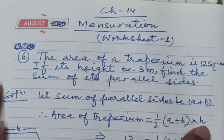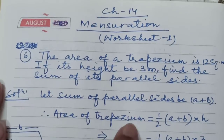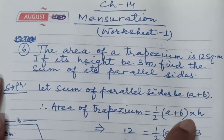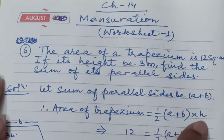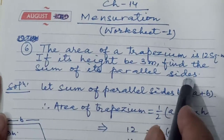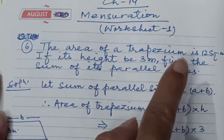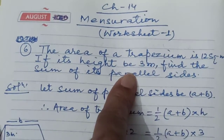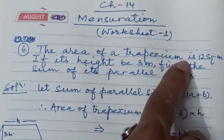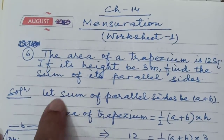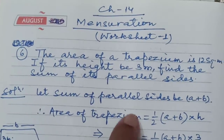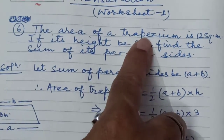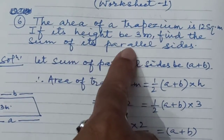So I repeat again: the formula for area of trapezium is 1/2 × (sum of parallel sides) × height. In this question, the area of trapezium is given as 12 square meters, the height is also given as 3 meters, and we have to find the sum of the parallel sides.